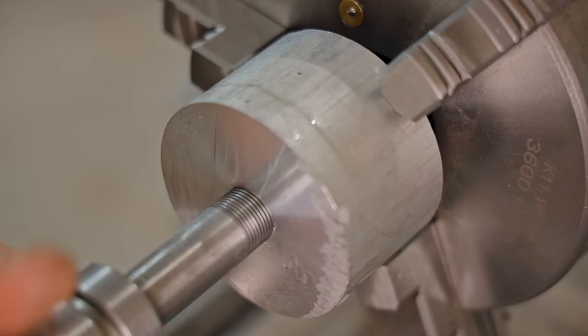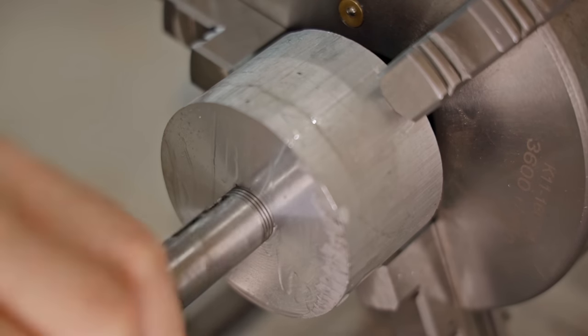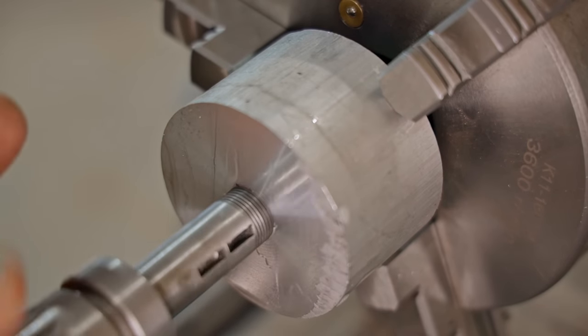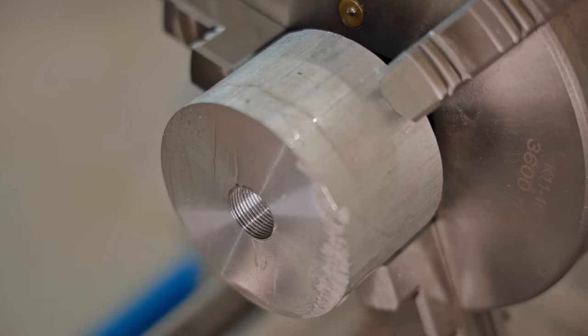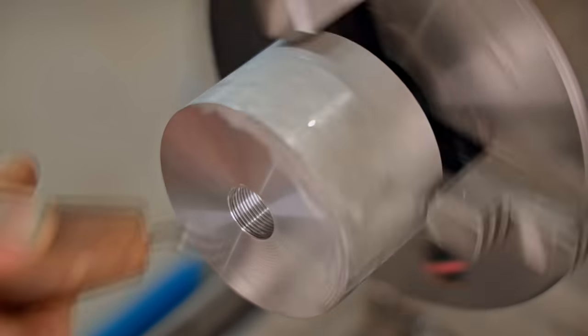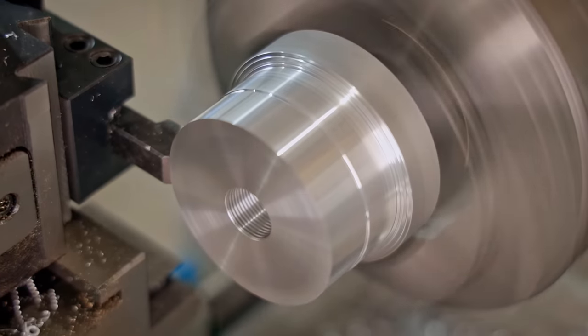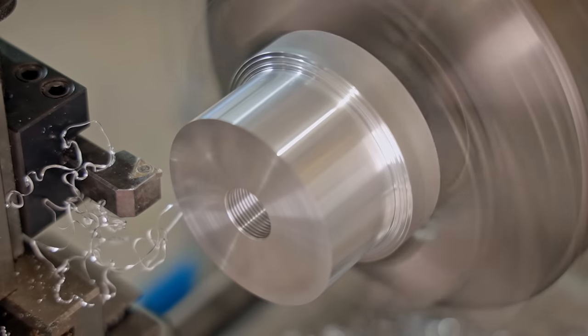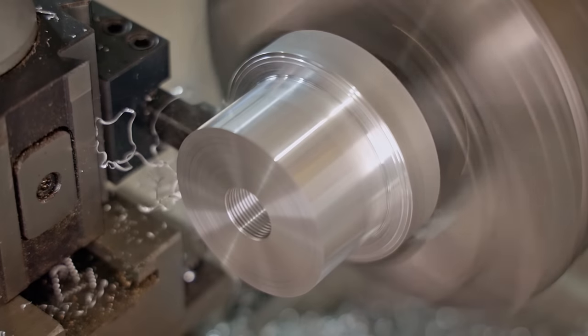Anyway the threading went very well and that's just about perfect. I should have chamfered the hole before threading but I'll do it now anyway. Next I'll start turning it down by making two shoulders and then I'll blend between the two by turning down a curve.